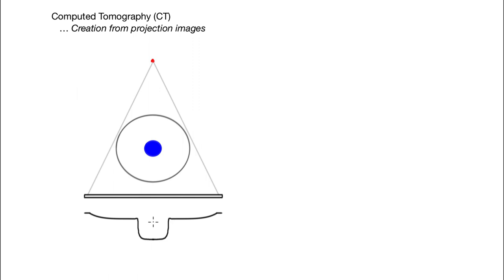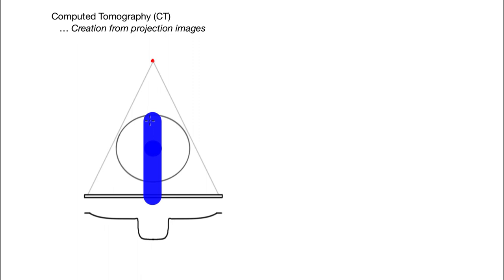In CT imaging, we do something called back projection. You're going to start here in the middle or anywhere in the image, and you know what the intensity is, and you back project it through the image. If I measure low intensity, I back project it up to the image. I know that somewhere along that line, the low intensity came from somewhere along that line.